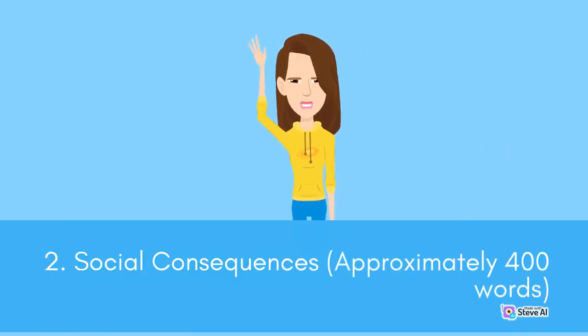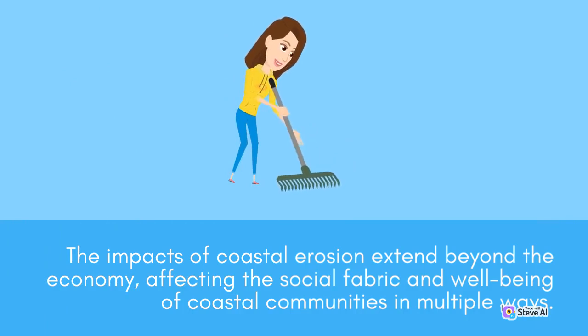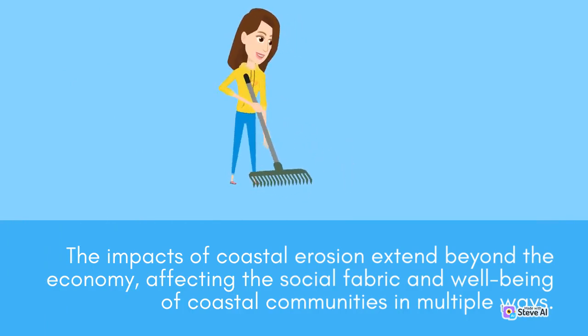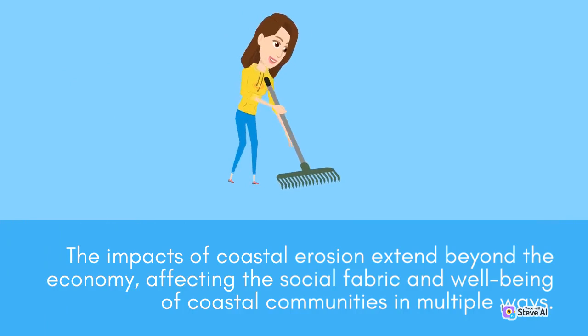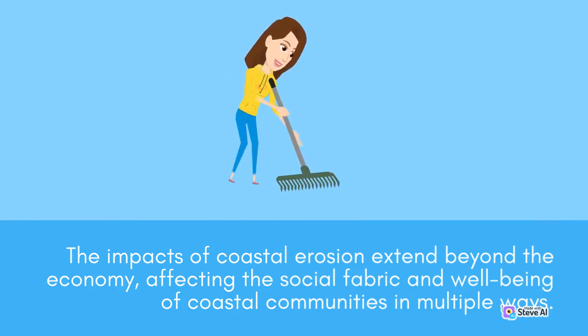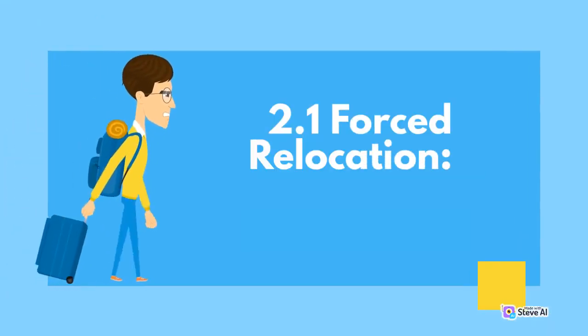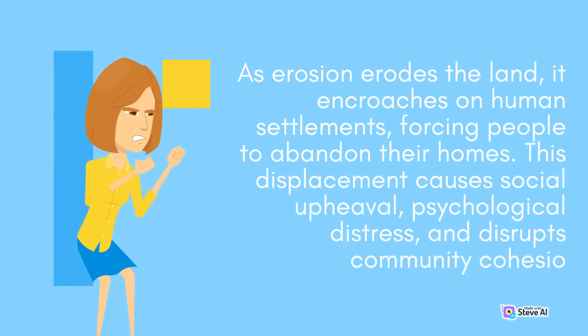2. Social Consequences. The impacts of coastal erosion extend beyond the economy, affecting the social fabric and well-being of coastal communities in multiple ways. 2.1 Forced Relocation. As erosion erodes the land, it encroaches on human settlements, forcing people to abandon their homes. This displacement causes social upheaval, psychological distress, and disrupts community cohesion.